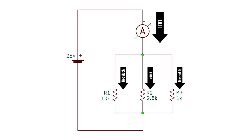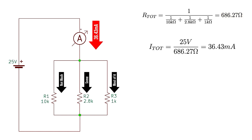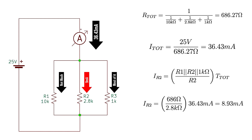But what if we have a current entering a node and it gets split across multiple resistors? We know current takes the path of least resistance, but some current will also flow in the other legs. Here we have 10k parallel with 2.8k parallel with 1k. With a 25-volt supply and a total parallel resistance of 686.27 ohms, we end up with a total current of 36.43 milliamps. Using the current divider for the 2.8k resistor — 686 ohms over 2.8k — multiplied by 36.43 milliamps gives about 9 milliamps. Remaining currents can be found using the current divider rule, Kirchhoff's law, or Ohm's law.